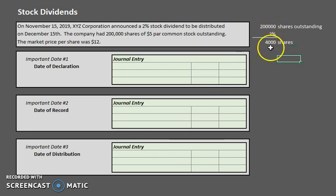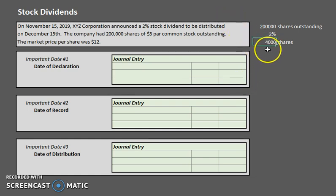Notice that 4,000 is in shares, not in dollars. As you may remember from earlier in your accounting career, journal entries must be in monetary units. So we can't simply say 4,000 shares — we need to express this in dollars rather than shares. This calculation is a first step we'll use to construct our journal entries.